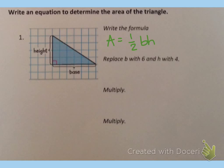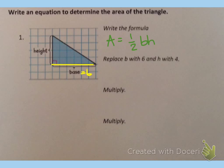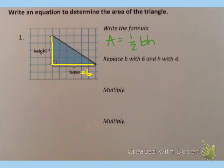As we look at the triangle on the grid, I see that it goes one, two, three, four, five, six units across, so the base is six units. And then the height is one, two, three, four units up and down.